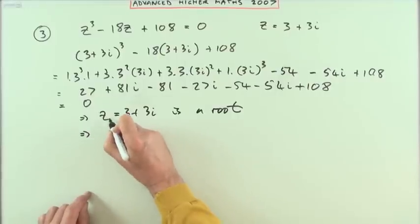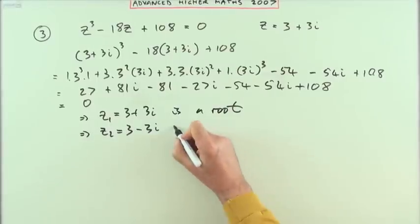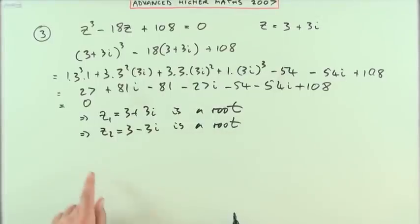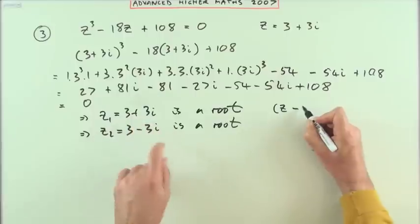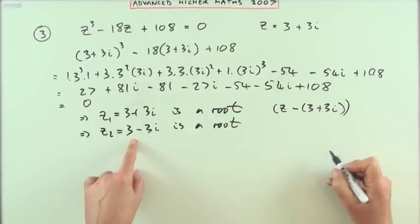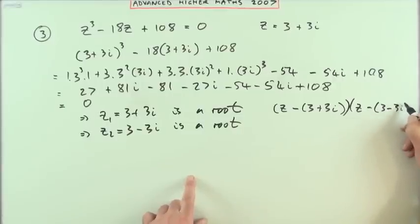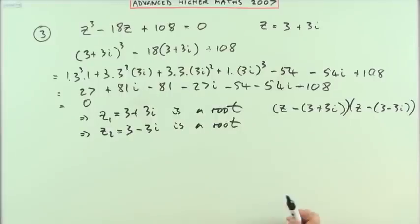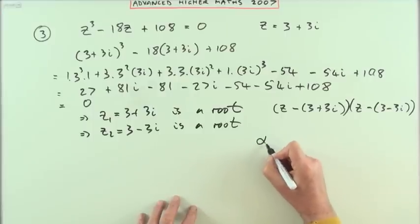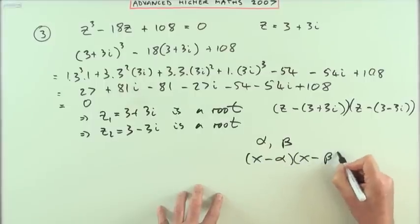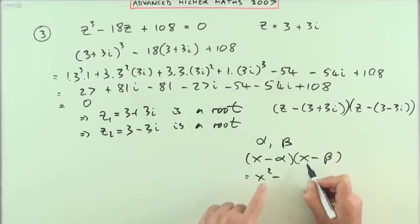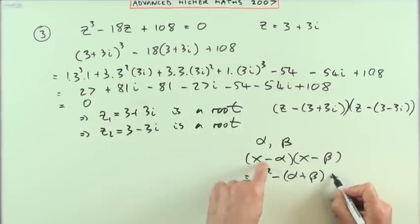Now that you know that's a root, I can make the remaining statements. If that's a root then its complex conjugate is also a root, and now I can reconstruct the irreducible quadratic factor. I'm not going to go through the tedious rigmarole of writing z minus (3+3i) times z minus (3−3i) and multiplying out all three terms by three terms. There's a simpler way: if alpha and beta are roots of a quadratic, then the quadratic is x² minus (alpha plus beta)x plus alpha·beta.